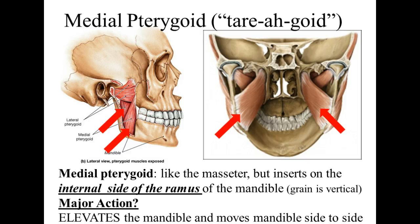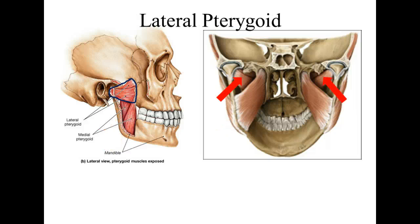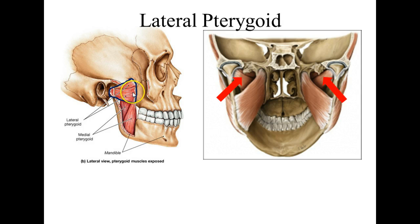Alright, the last muscle of mastication we're going to learn is the lateral pterygoids. These are lateral to the medial ones — kind of hard to tell on this picture. We're still looking at that underneath view here, and there are two in this one. Look at the fibers though — the cells are running horizontally, so it's going to have a different action. It's not going to elevate because it's running in the wrong direction to do that.